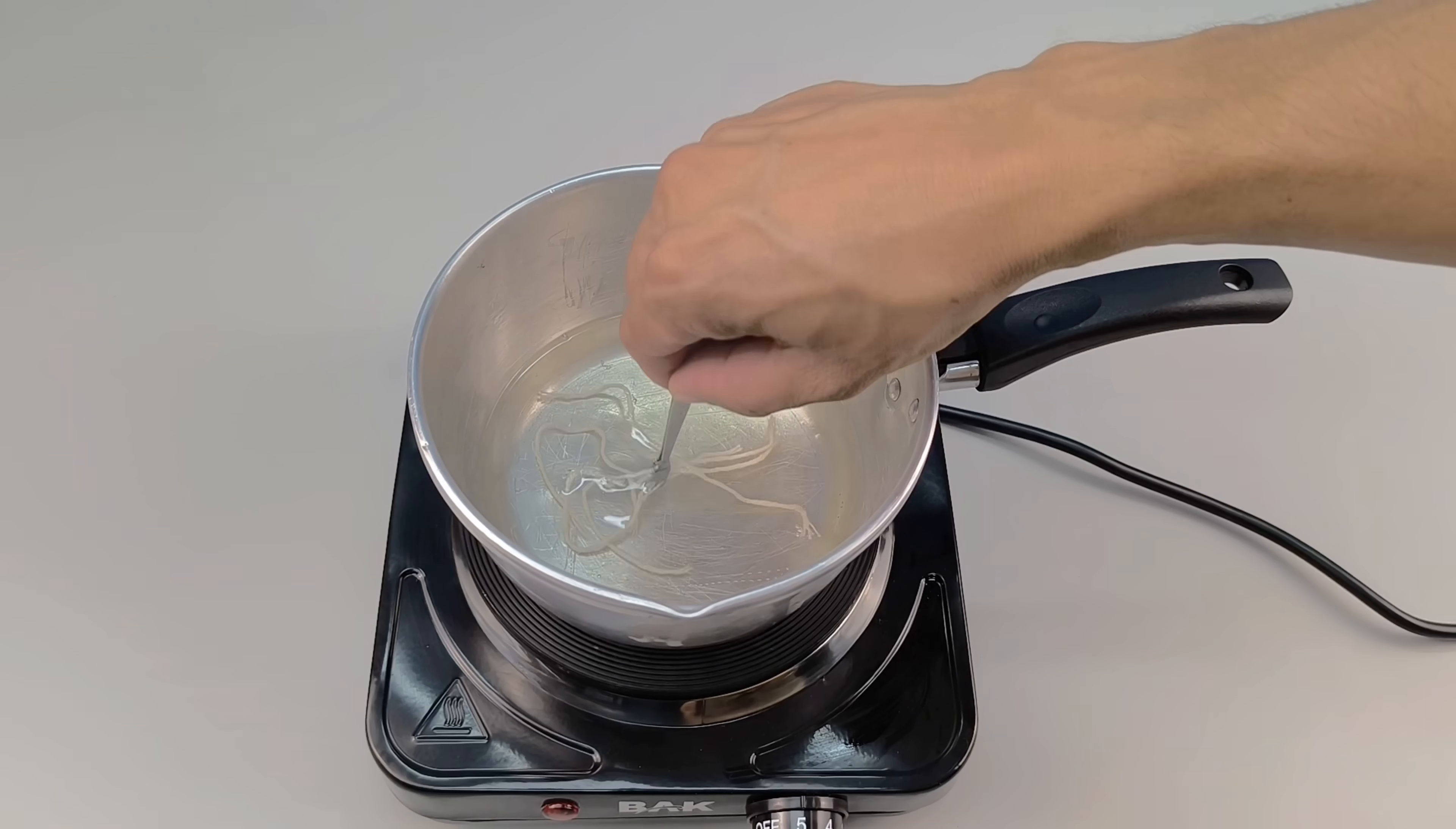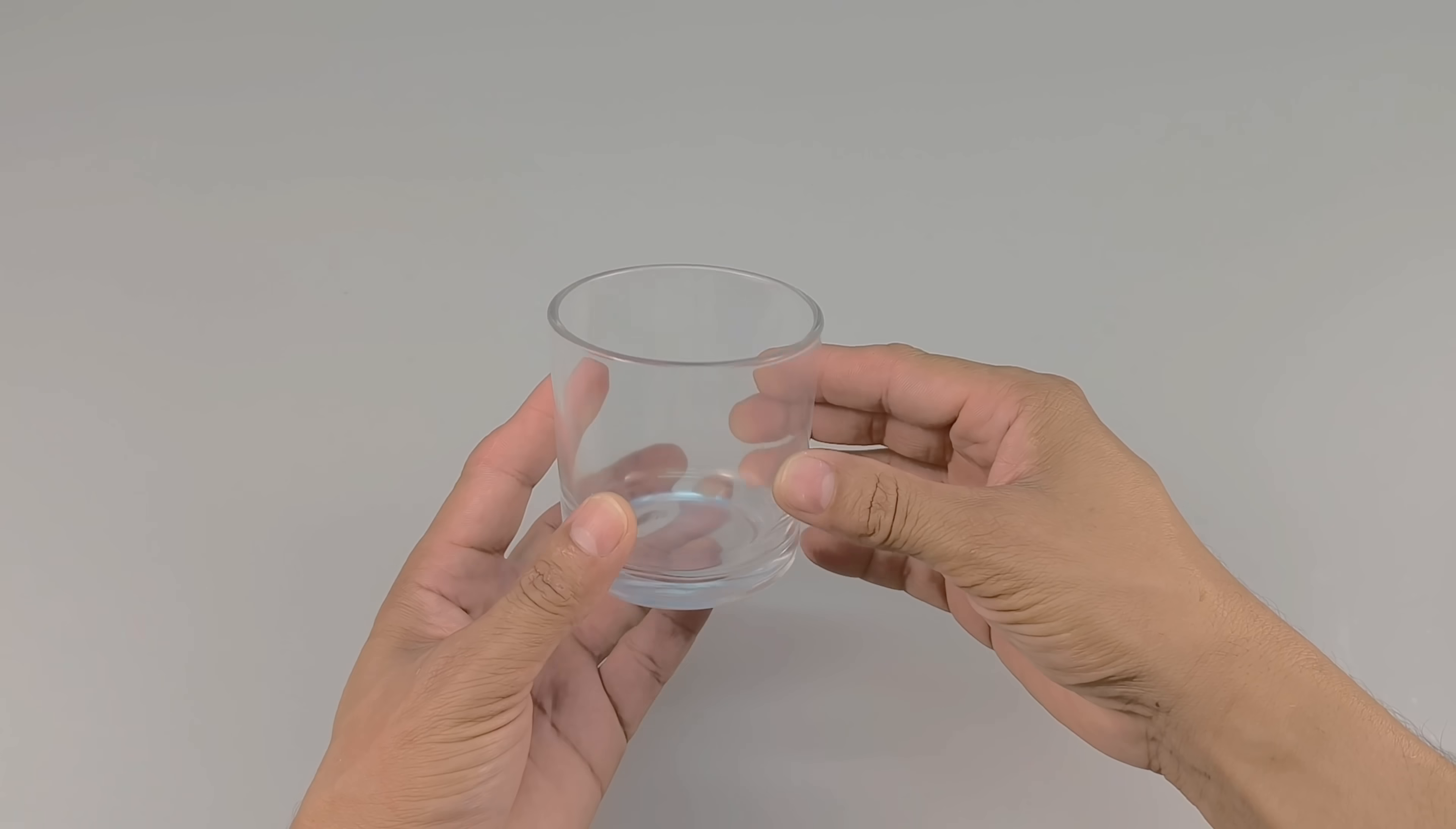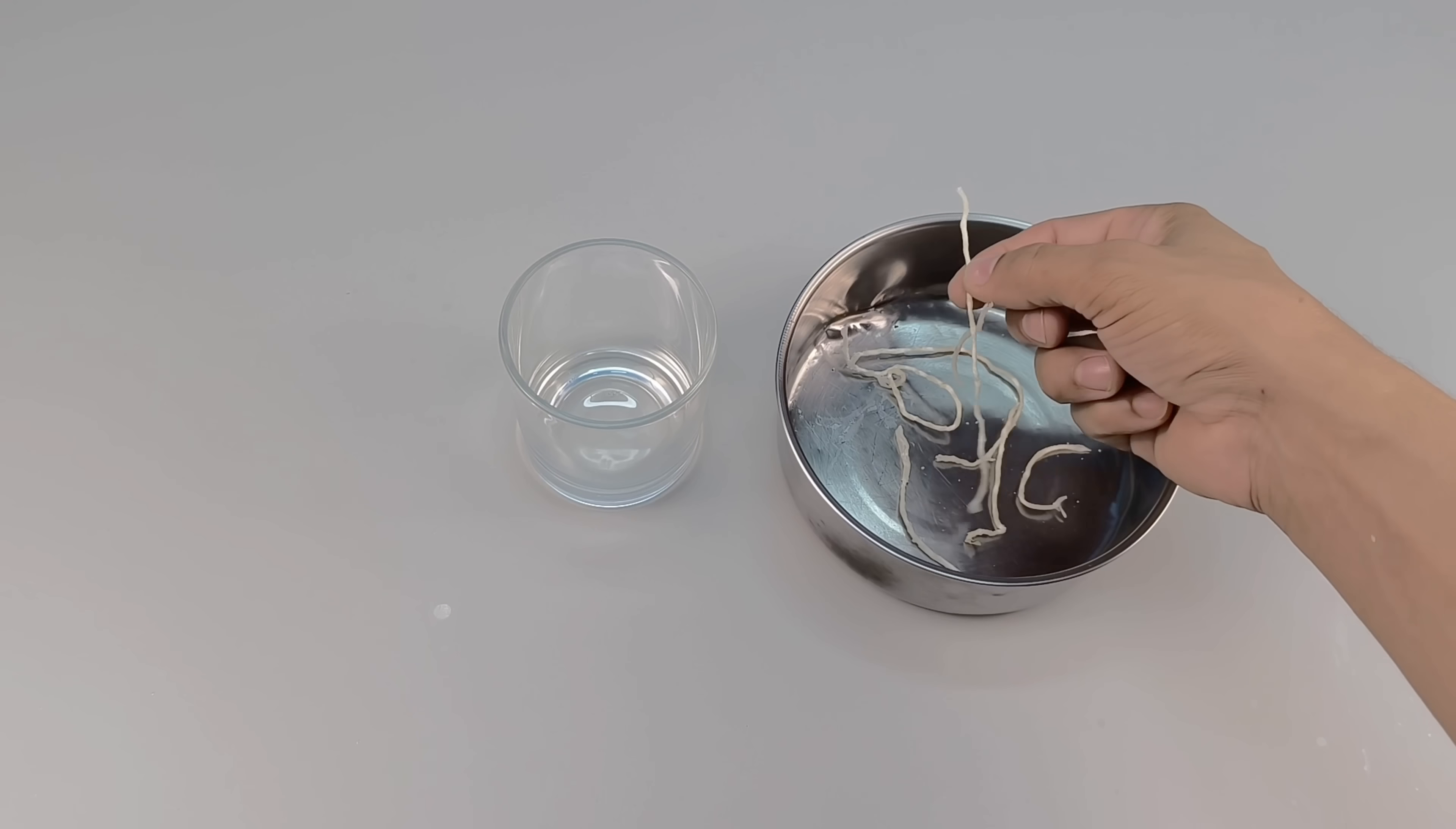Once this happens, carefully remove the wicks using a fork or tongs, and don't throw them away. We'll reuse them soon. Meanwhile, prepare a container where this transformation will take place. It could be a thick glass, an old cup, or even a small, heat-resistant can.